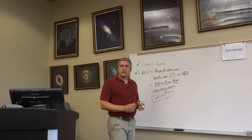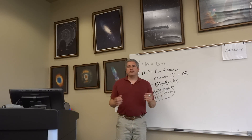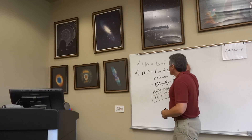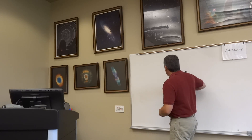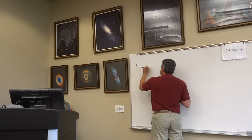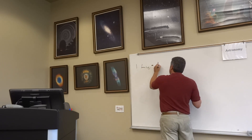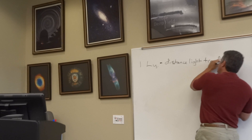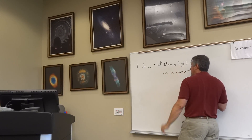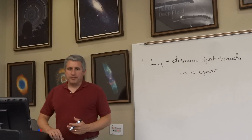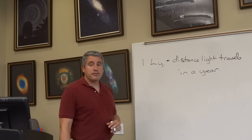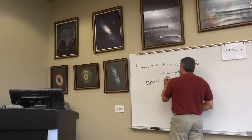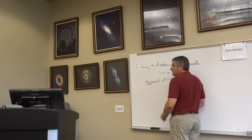And then lastly, if you want to travel to the stars, there is one larger unit — and that is the light year, which sounds very sci-fi. The light year is defined as the distance light travels in a year. To figure out the distance light travels in a year, we're going to need two things: the first is the speed of light, which we will discuss in our next segment.